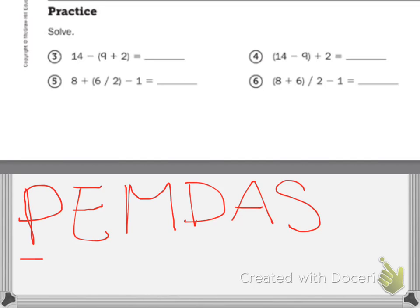First I have to see are there any parentheses. There is. Nine plus two is eleven. No exponents, no multiplication, no division, no addition, but the subtraction is next. So fourteen minus eleven is three.